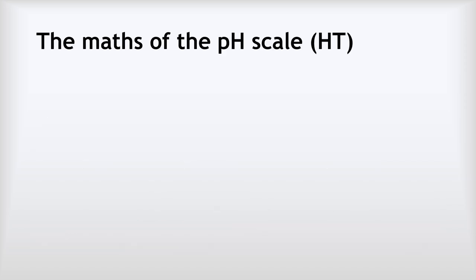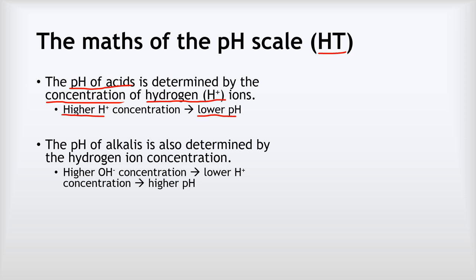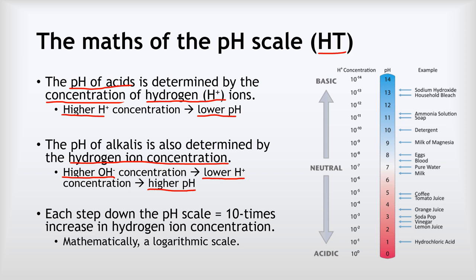Now the mathematics of the pH scale — this is higher tier content, so ignore it if you're doing foundation tier. The pH of acids is determined by the concentration of hydrogen ions; the higher the hydrogen ion concentration, the lower the pH. For alkalis, a higher hydroxide concentration leads to a lower H⁺ concentration, which means a higher pH. pH is always ultimately controlled by the concentration of hydrogen ions. Each step down the pH scale represents a tenfold increase in hydrogen ion concentration.